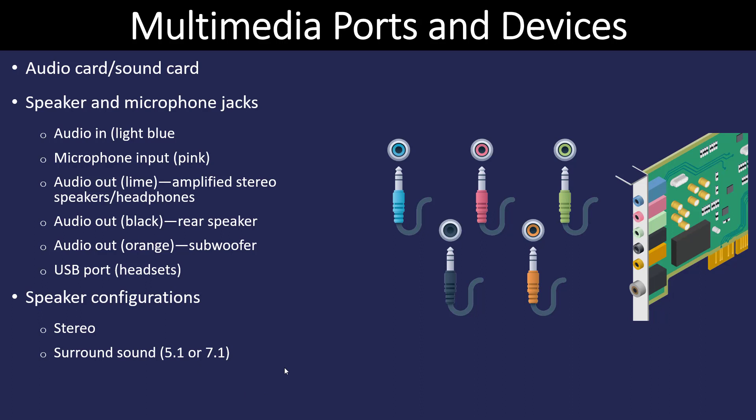Most computers today have onboard audio, although it is possible to buy an audio sound card, which will give more features than the built-in audio. On the back of a computer, whether it has onboard audio or a card, you'll generally see at least three jacks. Blue is line in, red or pink is the microphone, and green is audio out. The other colors — black and orange — could be for a rear speaker or subwoofer. There is no industry standard on what each color is going to do.